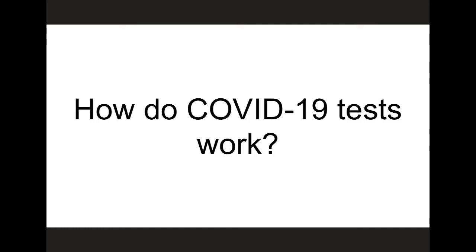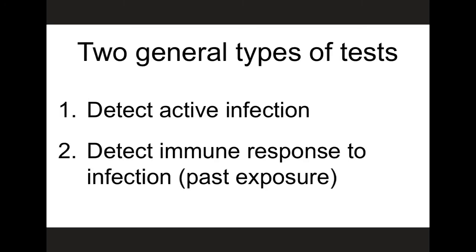Now that we've discussed transmission, the next topic I want to cover is clinical tests for COVID-19. There has been a lot of talk about testing over the past several months — testing capacity, percent positivity, lines to get tested, often long waits for results. But I'm not sure everyone really understands how these tests work and exactly what they tell us. There are actually two general categories of tests for COVID-19: one type detects active SARS-CoV-2 infections, while the other detects evidence for past exposure to SARS-CoV-2 by detecting an individual's immune response to infection. The first category has been the focus of most discussions of testing capacity and speed, and this is the type of test that's actually useful for helping to prevent the spread of the virus.